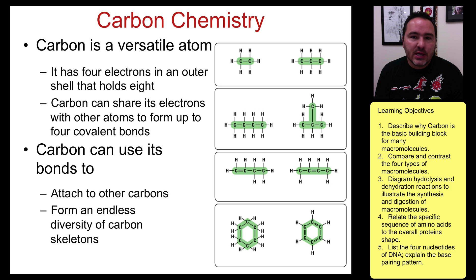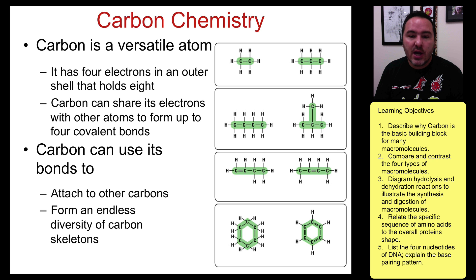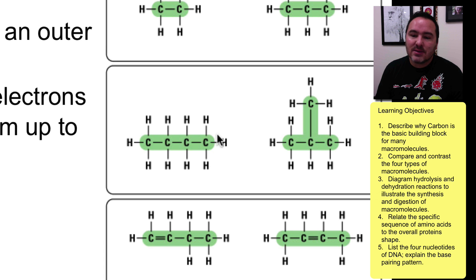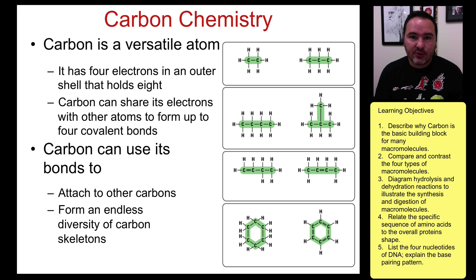In biology, carbon chemistry is really important. Carbon is a very versatile atom because it has four electrons in its outer electron shell, which leaves four spaces where it would like to fill those. So what it ends up doing is sharing those extra four spaces, which gives you the possibility of forming endless amounts of chains, circles, and rings. You can even double bond sometimes, so a huge diversity of bonding patterns can take place because of carbon's outer electron shell.